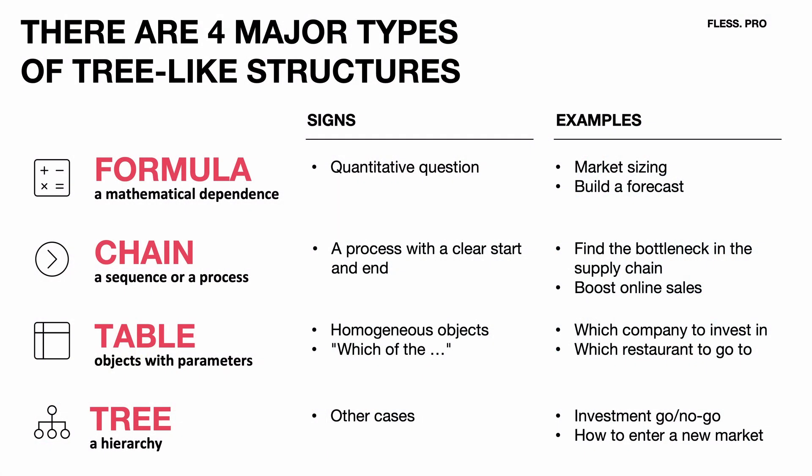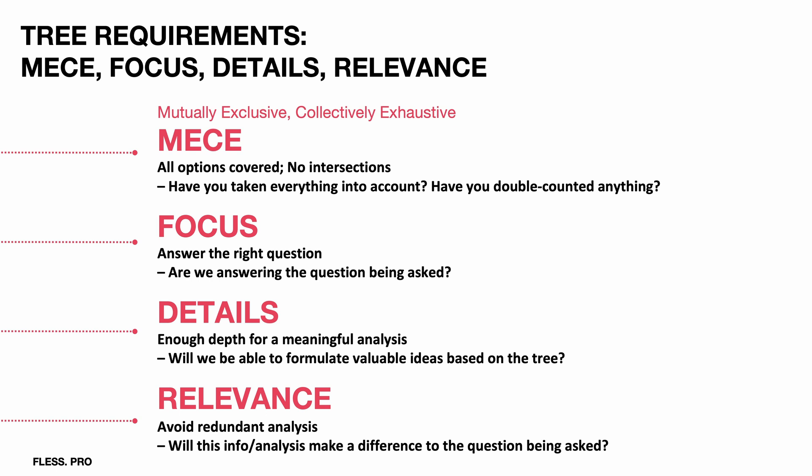Secondly, clearly define the problem, the success criteria, the solution space, limitations, and the stakeholders. The better you understand the context, the better you can tailor your decision tree to your unique problem. Thirdly, keep an eye on the requirements. Choose the right type of structure — a formula, a funnel, a table or an outright tree. Make sure its branches are mutually exclusive, collectively exhaustive, focused on the main question, relevant and detailed enough to be useful.